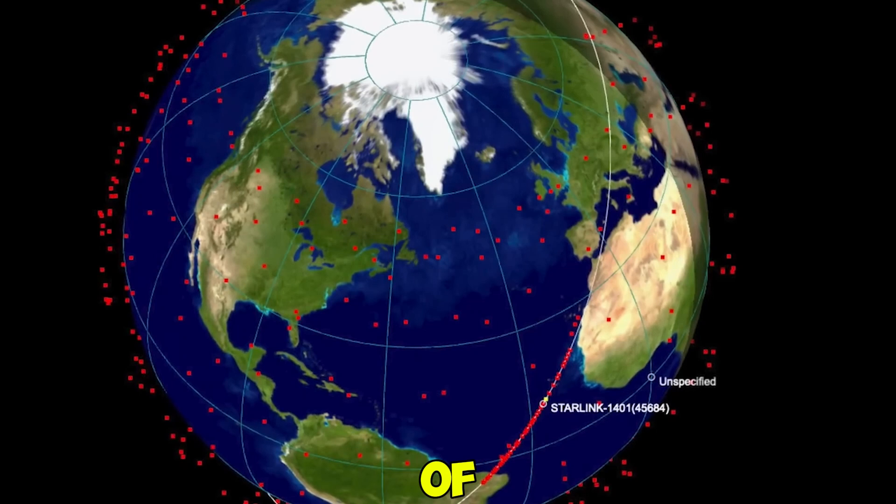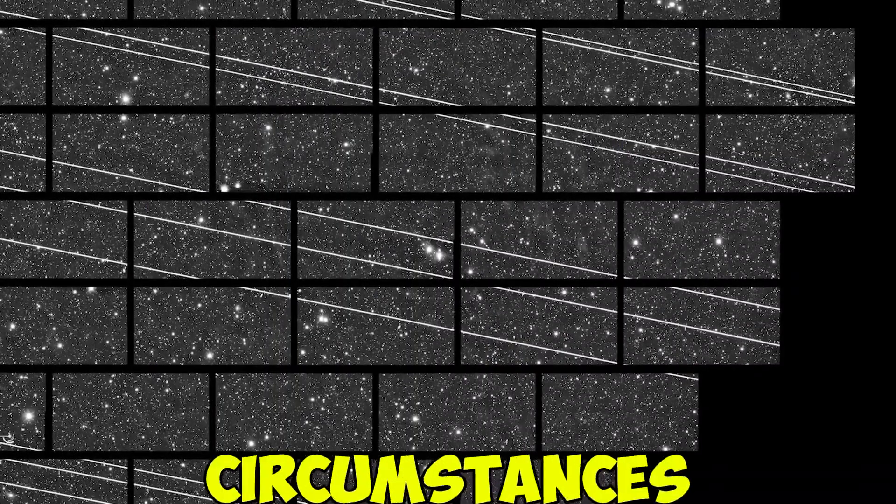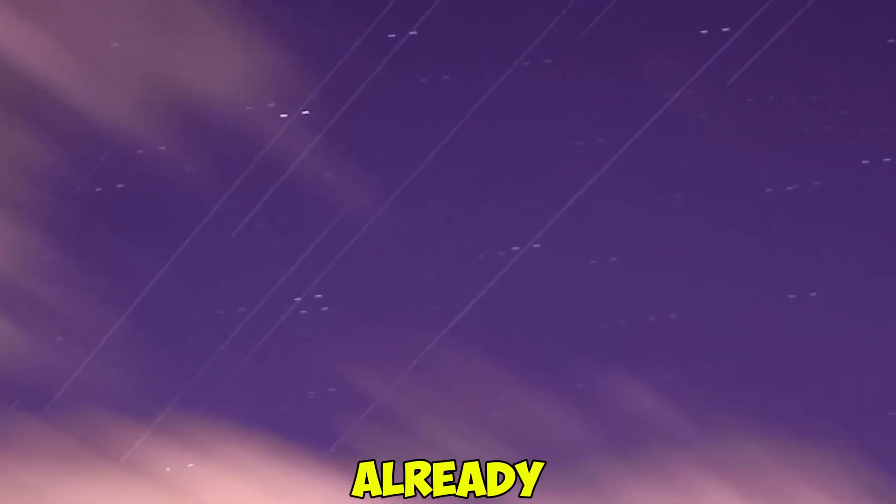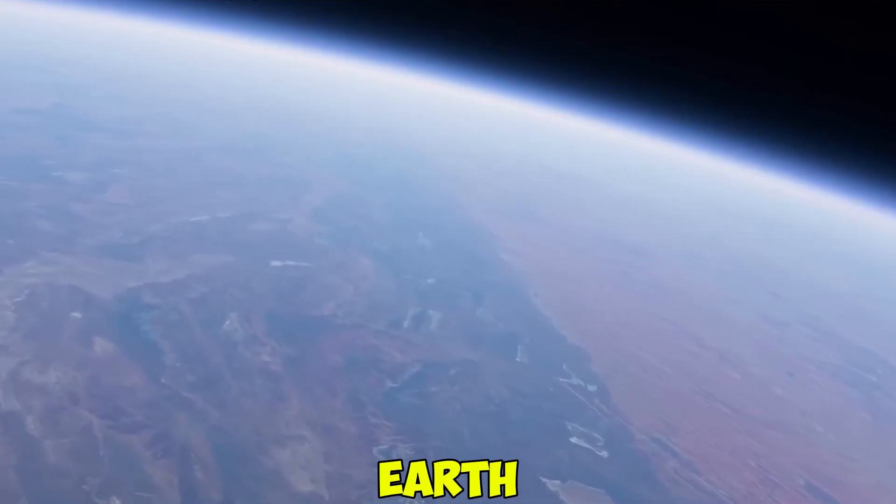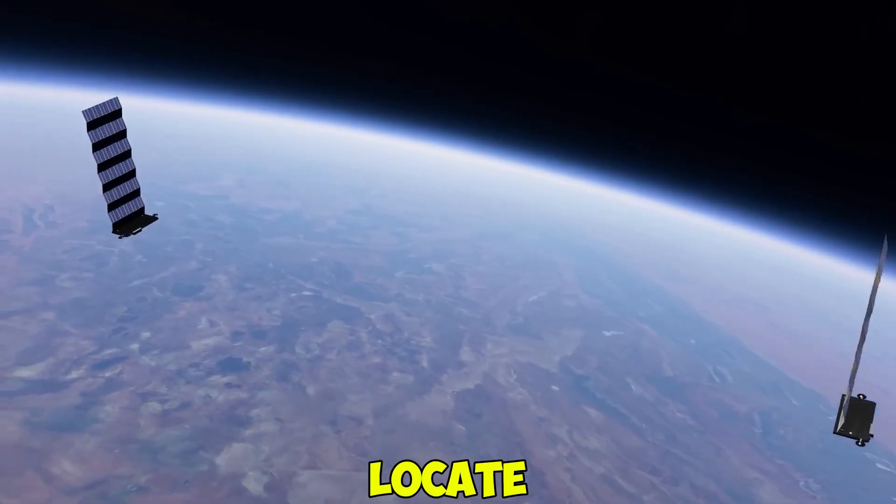This is why data from a minimum of four satellites is required to determine the location. However, in specific circumstances, three satellites would suffice. For instance, if I am already aware that I am on Earth's surface, Earth acts as a single spheroid and by using the other three satellite spheres, I can locate myself.